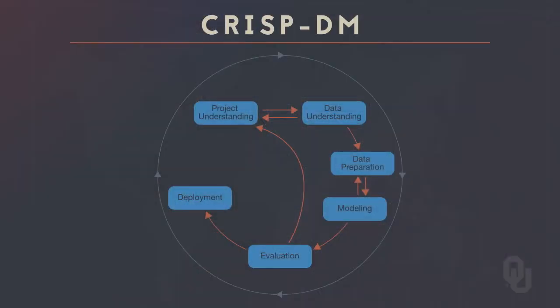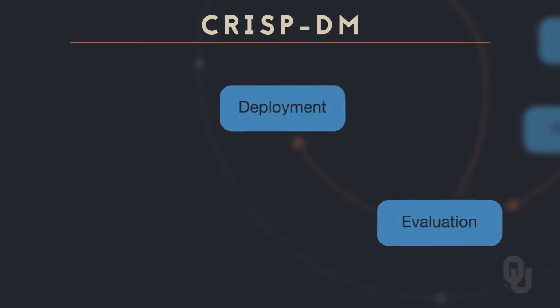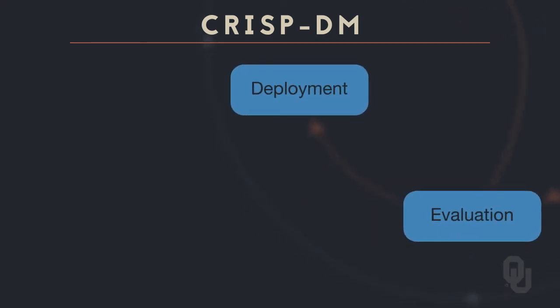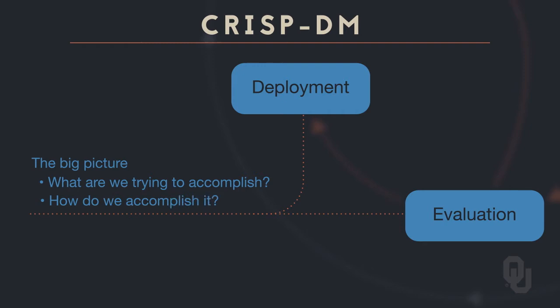In this unit, we will step back from most of the mathematics and modeling and programming and address some important qualitative issues. We will briefly outline the elements of the evaluation and deployment phases of CRISP-DM, both of which require thinking about the big picture — that is, what are we really trying to accomplish in this project and how do we go about actually doing it?